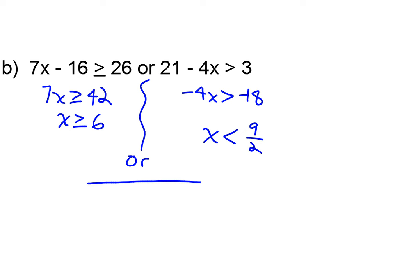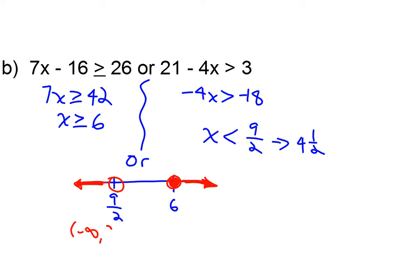If I want to consider these on a number line, I would put 6 and 9 halves — that's 4 and a half — so 4 and a half goes to the left, and 6 is on the right. I put two circles at 9 halves and at 6. Since 6 is inclusive, it's colored in; greater than 6 shades to the right. For x is less than 9 halves, that's exclusive so empty circle, and shade to the left. My shaded region and interval notation are negative infinity to 9 halves with a parenthesis, union 6 to infinity with a parenthesis.